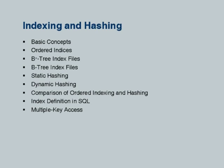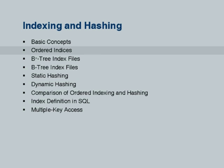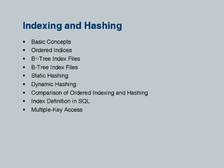Today we will start with basic concepts and then move on to a class of indices called ordered indices. What I described is an example of an ordered index and we will spend a fair amount of time on B+ tree indices. The book also has coverage of alternative indexing methods based on hashing, but for lack of time I am not going to cover it here. Pretty much all databases support B+ tree indices, and the general experience is that B+ trees work just as well as hash indices and give some extra benefits.